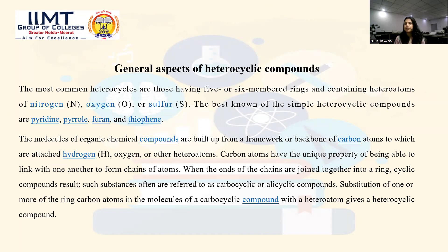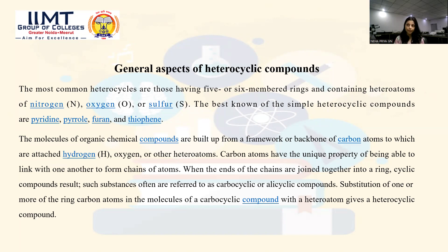Carbon has a unique property of being able to link with other atoms to form chains. When the ends of these chains of atoms are joined, they form a cyclic compound — a carbocyclic compound. When the substitution of a carbon in that ring is replaced by a hetero atom, the compound becomes a heterocyclic compound: a cyclic structure containing an element other than carbon or hydrogen.